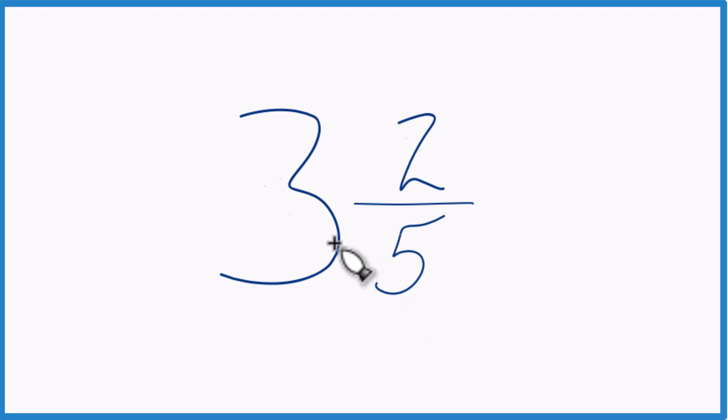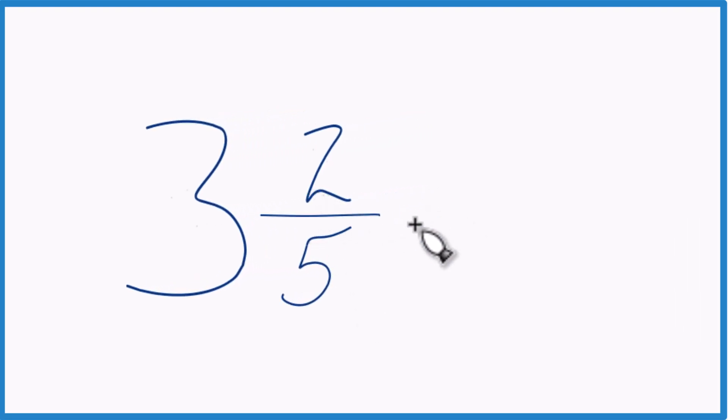Take the 3, that's the whole number, times 5. 3 times 5 is 15 plus 2. 15 plus 2, that's 17. That becomes our numerator.